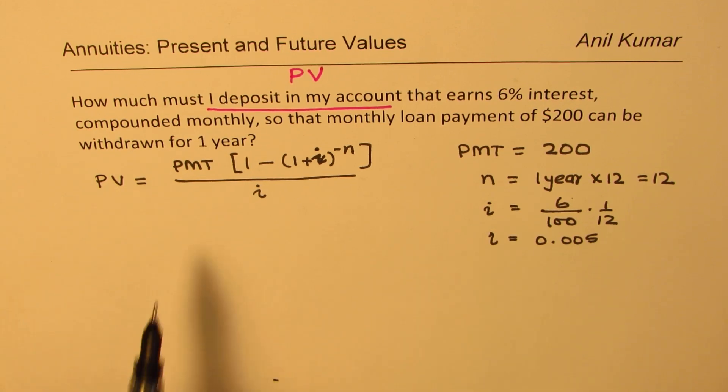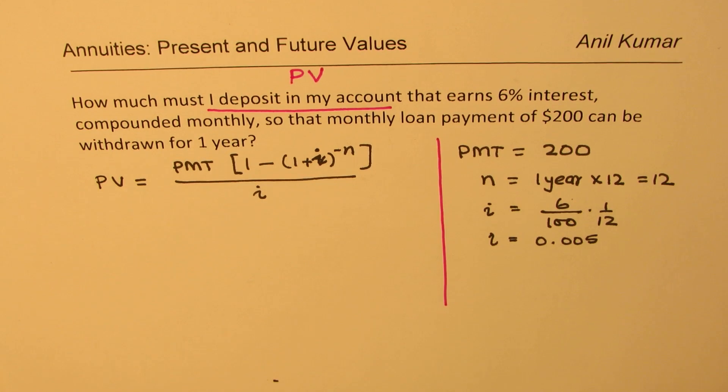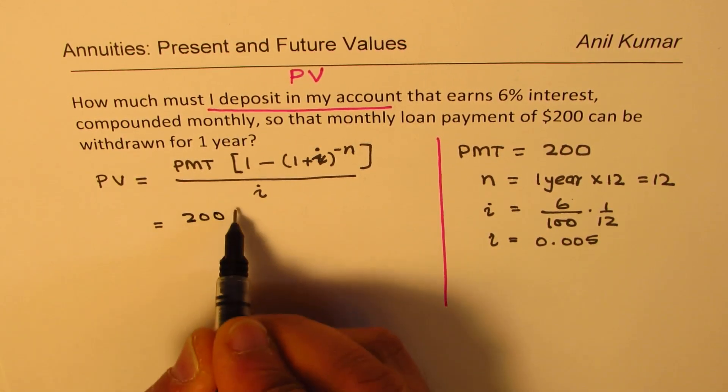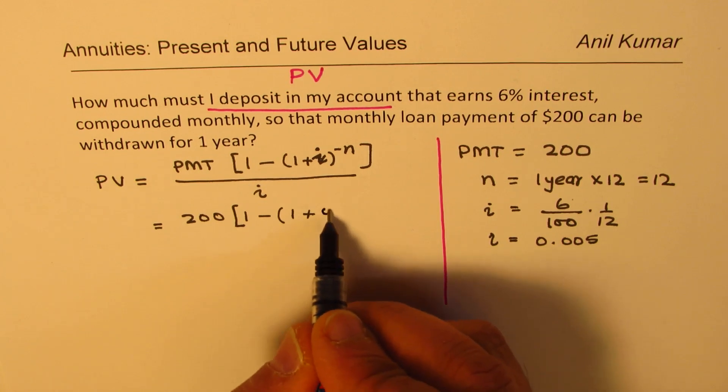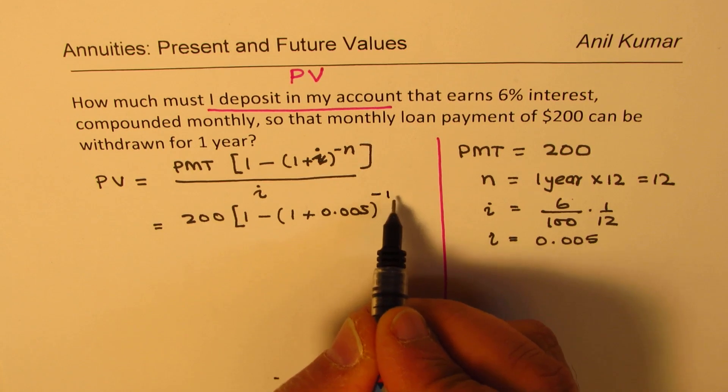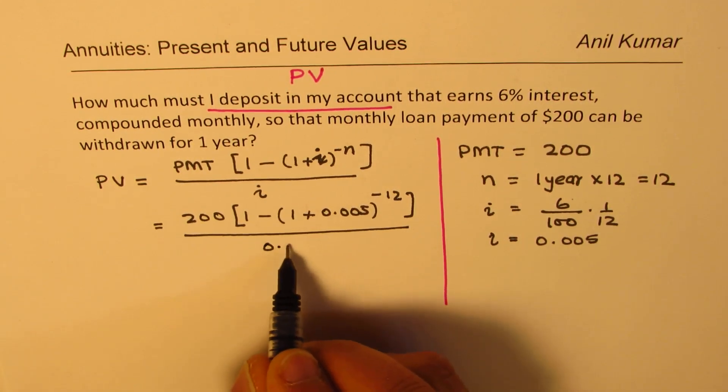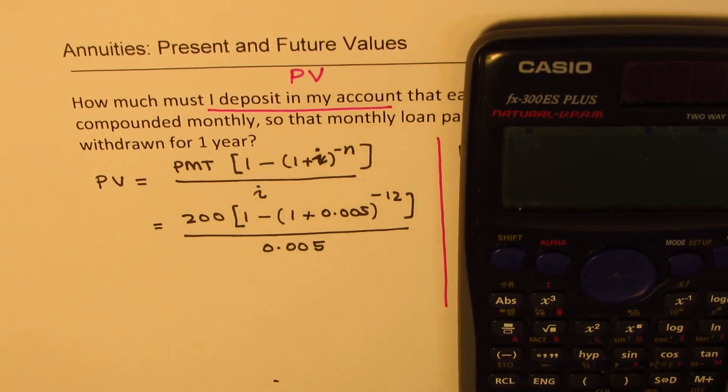Now, we just need to use calculator to find the answer. So let's substitute these values and get an idea. We get 200 times [1 minus (1 plus 0.005) to the power of minus 12] divided by 0.005. That is how we should be calculating the present value.